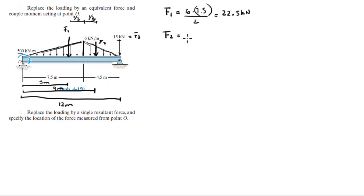F2 is the area of the smaller triangle, which is 6 times 4.5 divided by 2, which is equal to 13.5 kN.